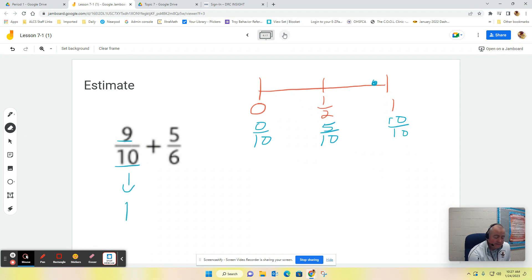When we look at 5/6, well, this will be 0/6. This will be 6/6, and this would be half of six, which is 3/6. Well, 5/6, again, is going to be somewhere over here.